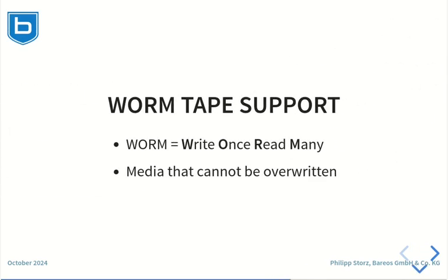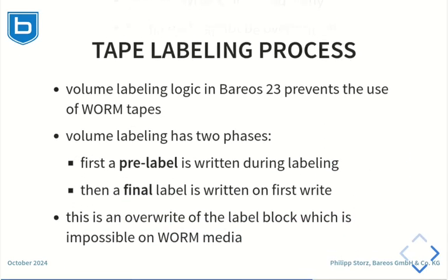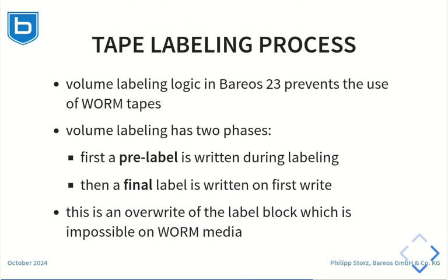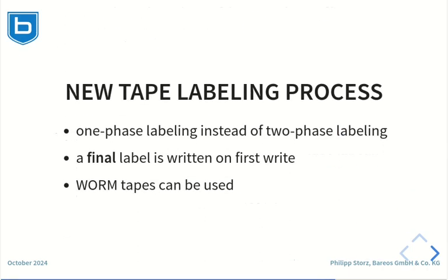Warm tape support. For archiving purposes, WORM tapes are available. WORM is the abbreviation of Write Once, Read Many. WORM media can be written but never overwritten or altered. The fact that data cannot be altered satisfies legal requirements for document archival. The Barrios 23 tape labeling process was not capable of using WORM tapes as it required overwriting of the label block — first a pre-label is written and in a later stage a final label is written, requiring the same data blocks to be overwritten, which is impossible on WORM tapes. To support WORM tapes, the labeling process was changed to a one-phase labeling where the final label is immediately written to the tape.